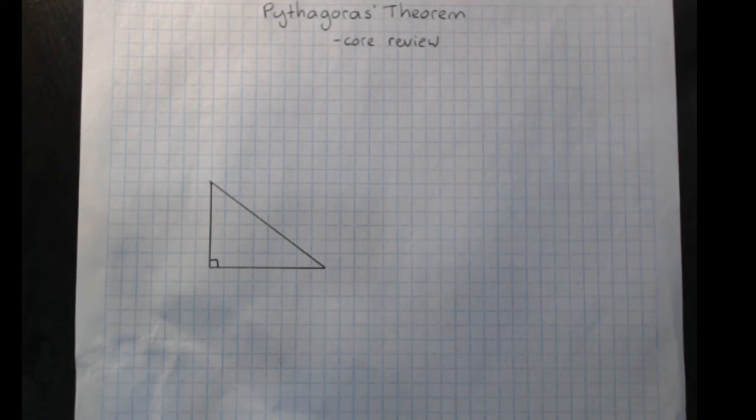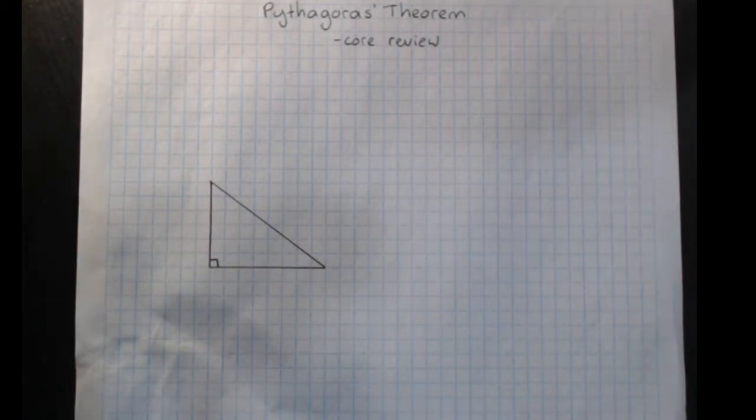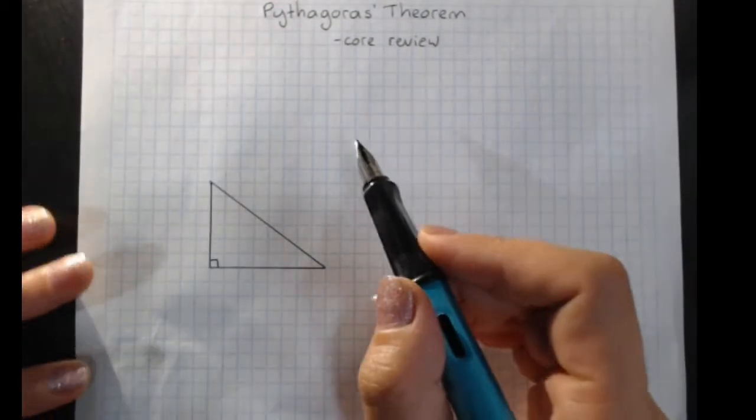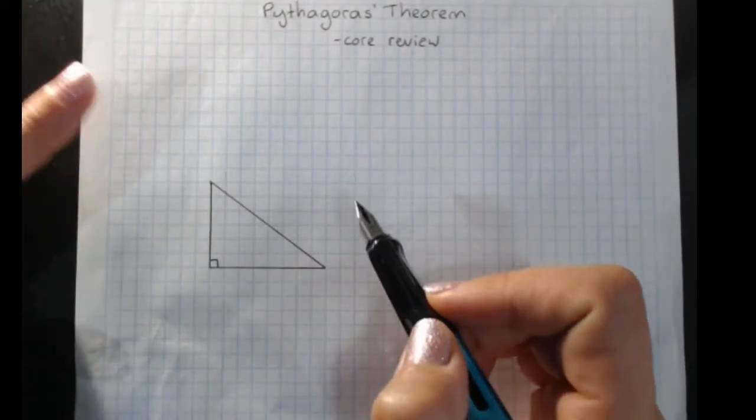So, Pythagoras' Theorem - this is our core review. Pythagoras' Theorem is by this guy called Pythagoras, who worked it out a very long time ago. That's why it's named after him. And it's about right-angled triangles.